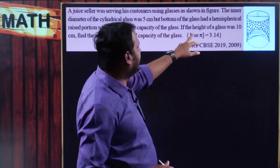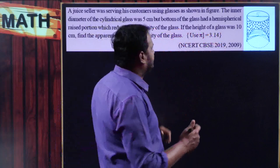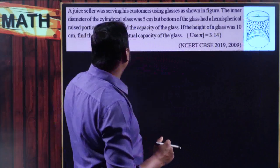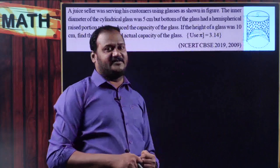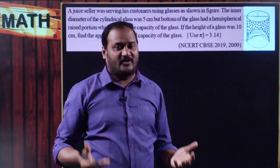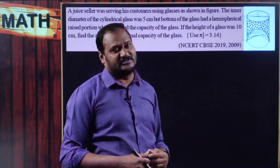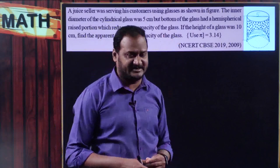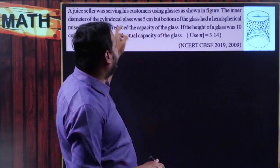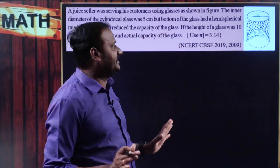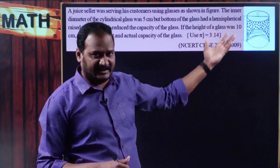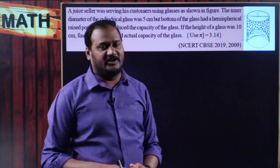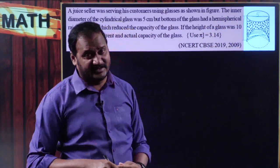The bottom of the glass had a hemispherical raised portion which reduces the capacity of the glass. If the height of the glass was 10 centimeters - height is from here to here, it is 10 centimeters. Find the apparent and actual capacity of the glass. Apparent capacity is generally how much juice you expect to get, while actual capacity is what you actually get. In order to find this, apparent capacity is the volume of the cylindrical glass, which is pi r squared h.